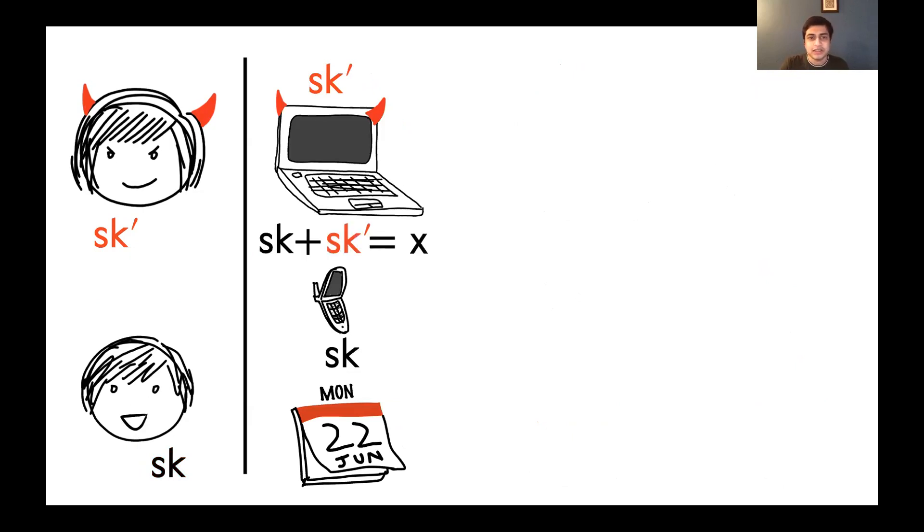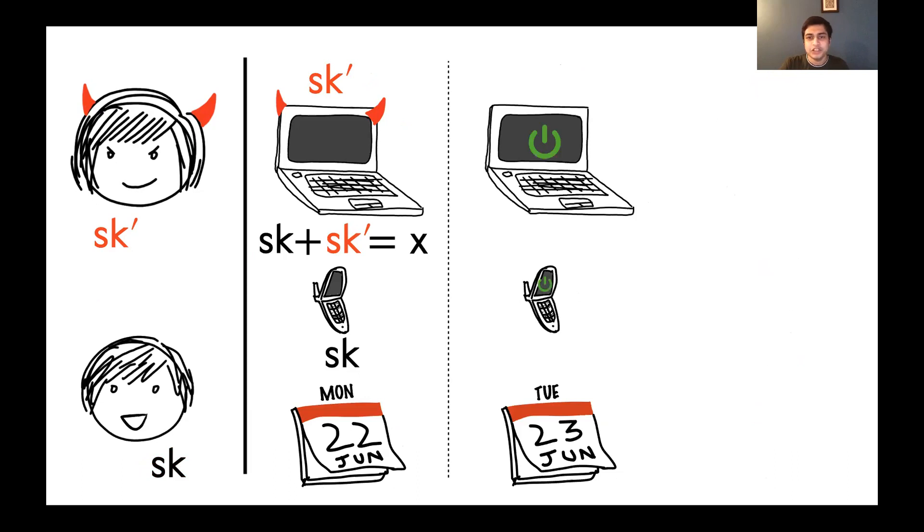One way to get around this is the following. Assume that the relation that the key fragments have is that sk plus sk prime will yield the common secret x. On Tuesday, in addition to resetting his devices, Bob also refreshes the shares of the signing key that these devices hold.